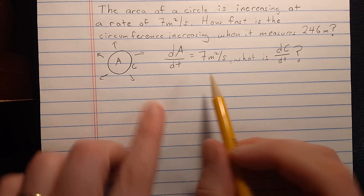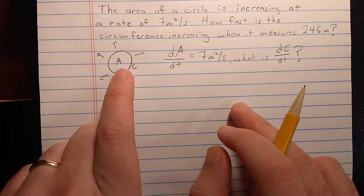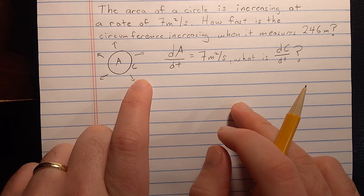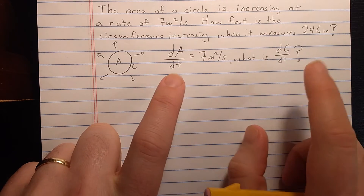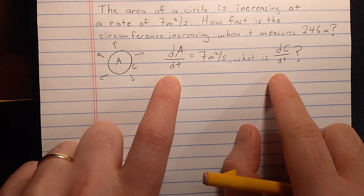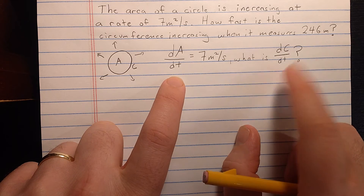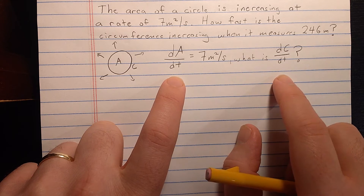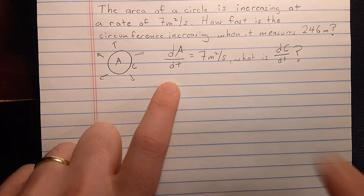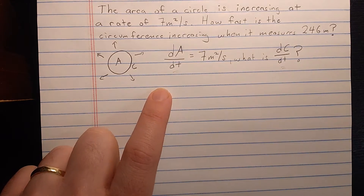In order to discover this, what I'm going to do is derive a relationship between A and C, and then I'll use a derivative to get a relationship between dA/dt and dC/dt — and that derivative will be with respect to time.